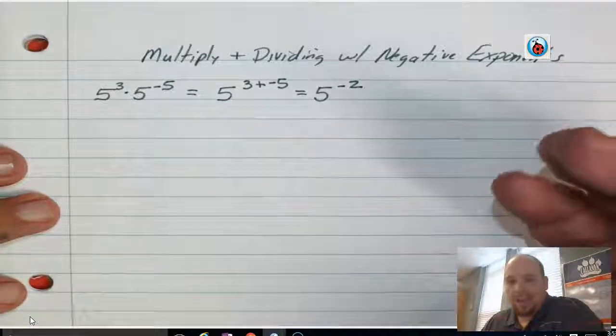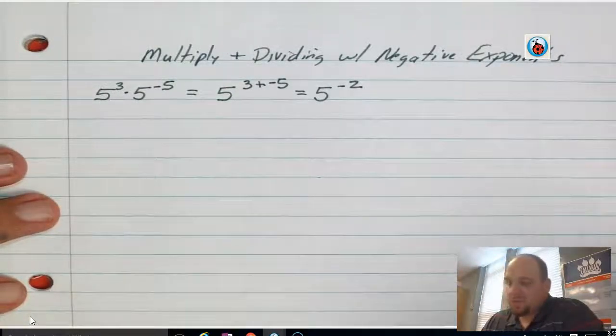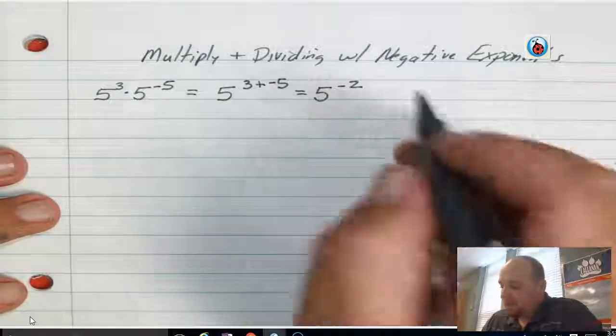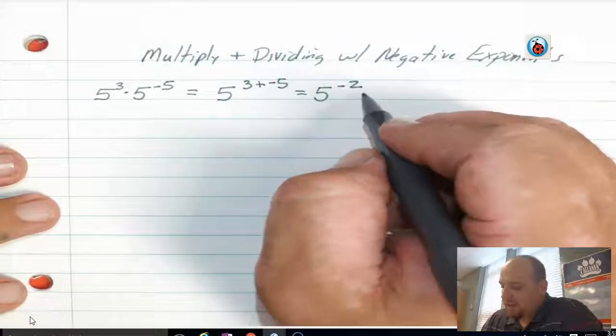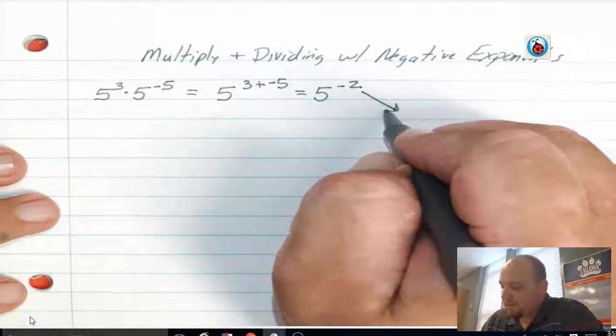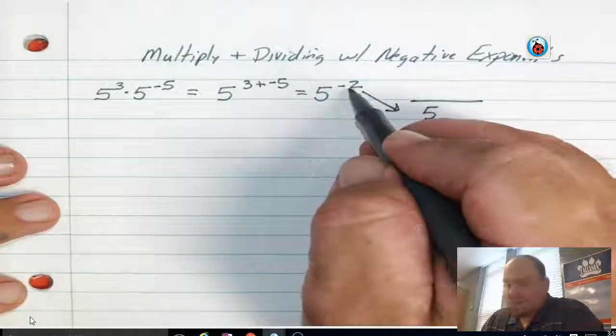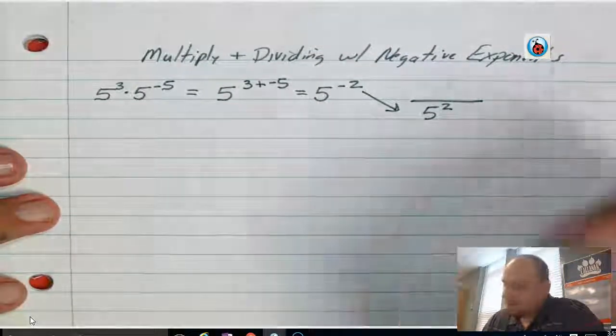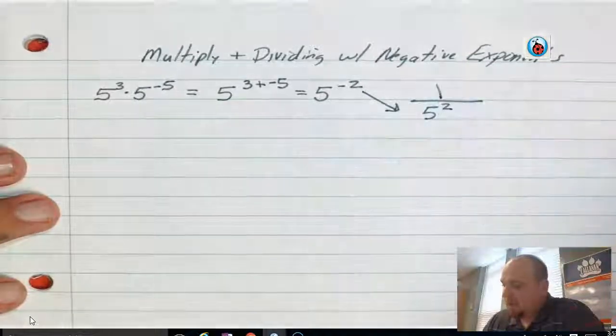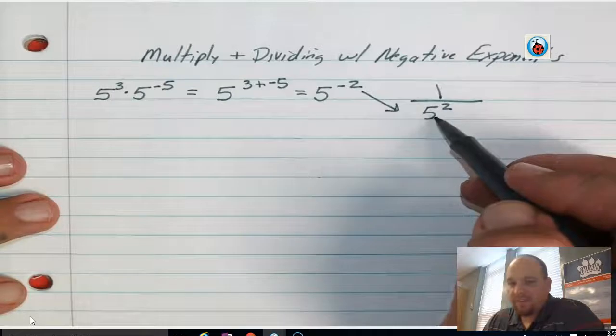Now, we don't want to write our answers with negative exponents, so we're going to use what we just learned. We're going to take this negative exponent that's upstairs, and we're going to send that thing downstairs. When we send that thing downstairs, we keep the base of 5. The negative 2 becomes a positive 2, and now we place a 1 up on top. And so our answer is 1 over 5 to the second.